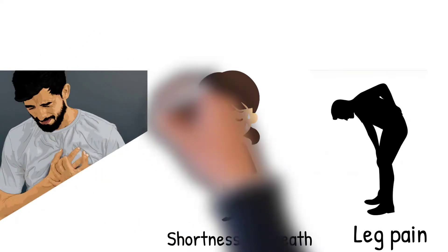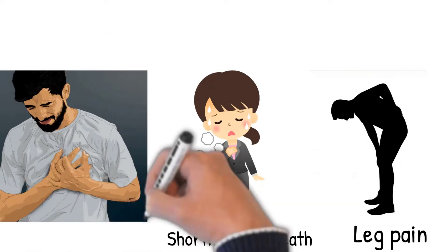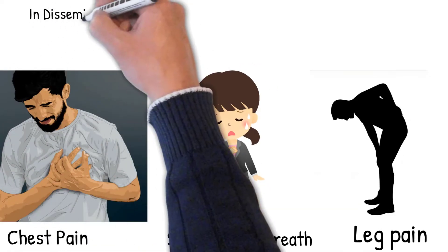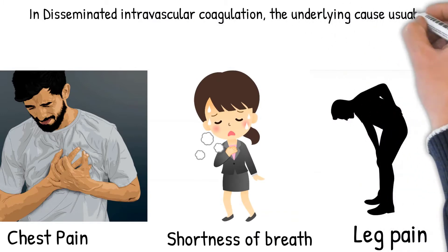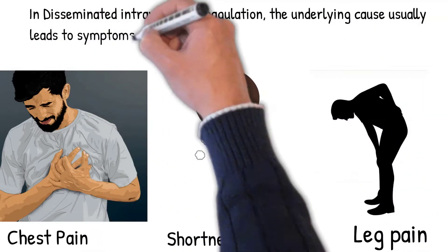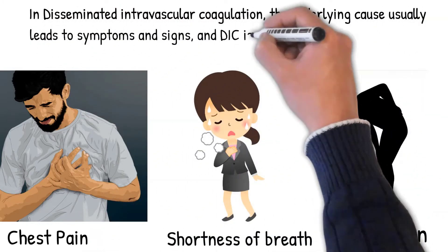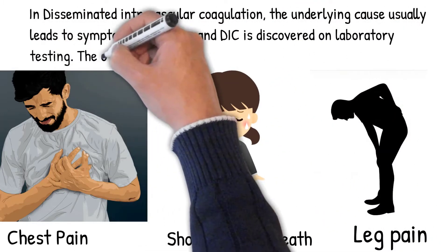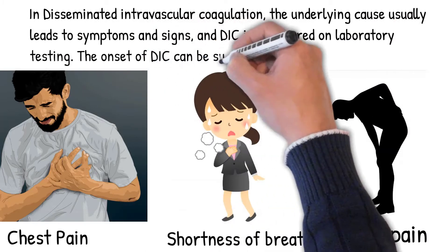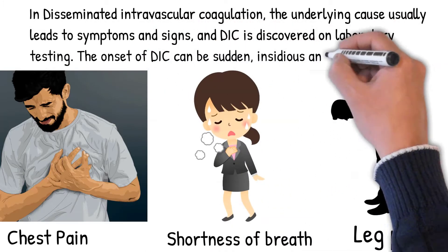In disseminated intravascular coagulation, the underlying cause usually leads to symptoms and signs, and DIC is discovered on laboratory testing. The onset of DIC can be sudden, insidious, or chronic.